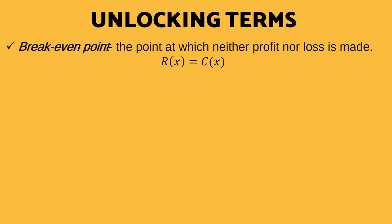Next, break-even point. That is the point at which neither profit nor loss is made. So it can be written as R of X equals C of X. The revenue equals the cost. The profit here, P of X, equals zero. So if we're talking about break-even point, the profit equals zero.